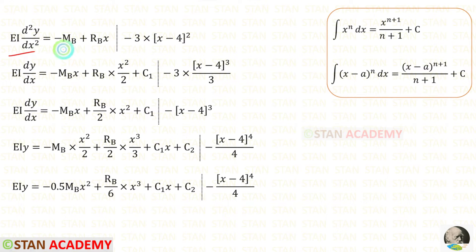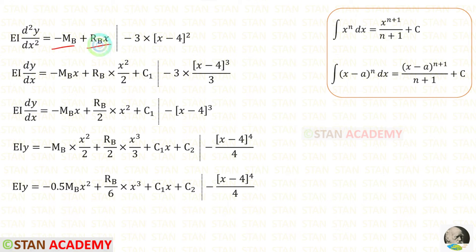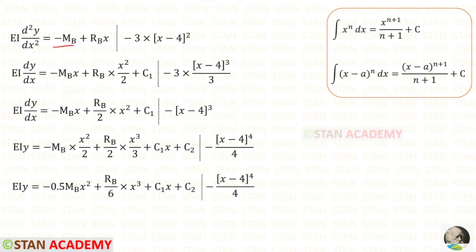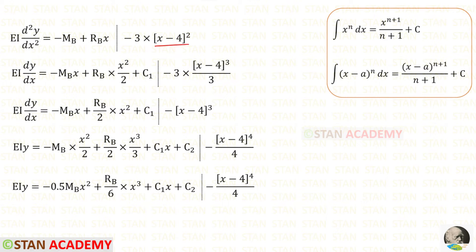Let us integrate both sides. When we integrate d²y/dx² we get dy/dx. For integrating the polynomial terms we use the standard formula. When we integrate minus Mb we get minus Mb·x. When we integrate x we get x²/2. C1 is the constant of integration. When we integrate (x minus 4)² we get (x minus 4)³ upon 3.